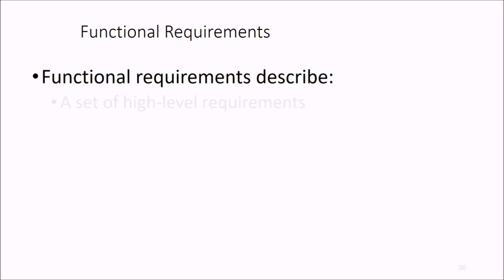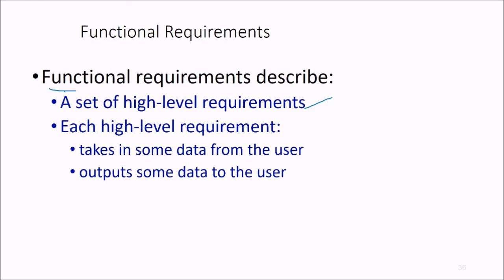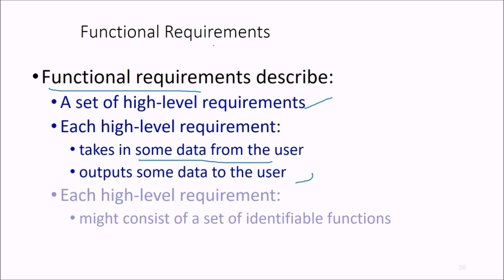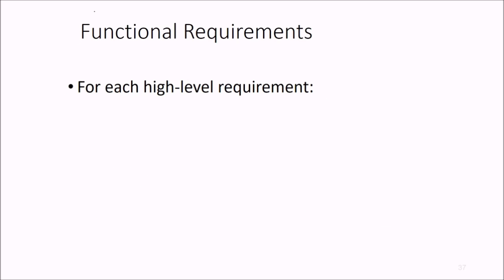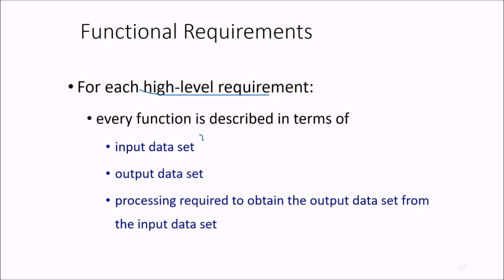So function requirements should describe a set of high level requirements, and each high level requirement takes in some data from the user and should output some data. And each high level requirement might consist of a set of identifiable functions as well, if at all it is possible. And for each high level requirement, each function is described in terms of input data set, output data set, and then processing requirement or processing required to actually obtain the output data set from the input data set.